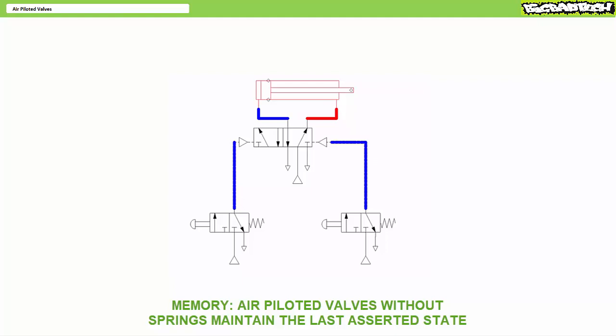This begs the question: what happens when you turn the system off? In the absence of any new pilot signal, the system simply remains in the last asserted state because of memory. The double air piloted valve does not have an offset spring because the two air pilots work in opposition. When a particular air pilot is asserted, it shifts the spool into that position and the spool stays there even if that pilot signal is lost. The only way to move the valve into the opposite state is to assert the other pilot.